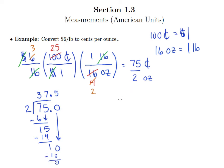So our answer is that $6 per pound is the same as 37.5 cents per ounce.